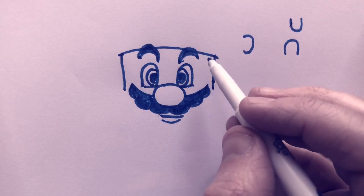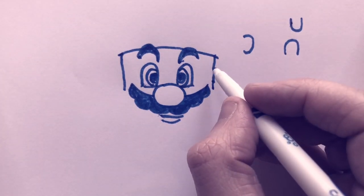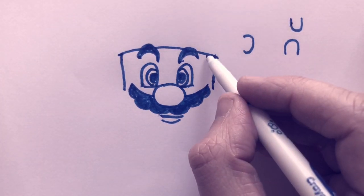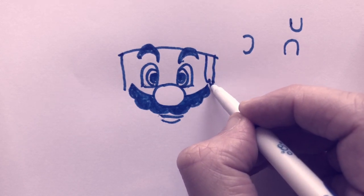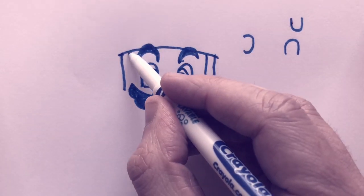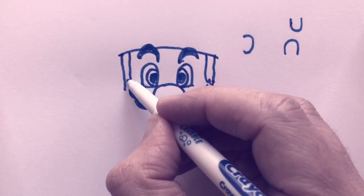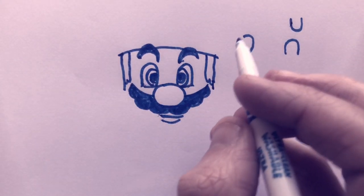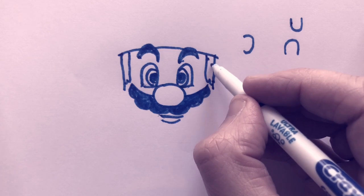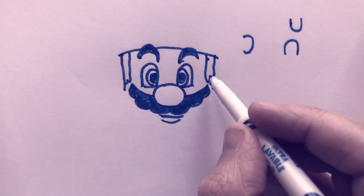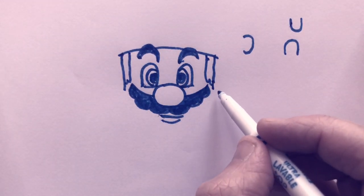Now these two lines are going to be the beginning of his huge sideburns. So we're going to go next to those lines on the inside, draw another line parallel to that line, going right along with it. Those are going to be his sideburns.